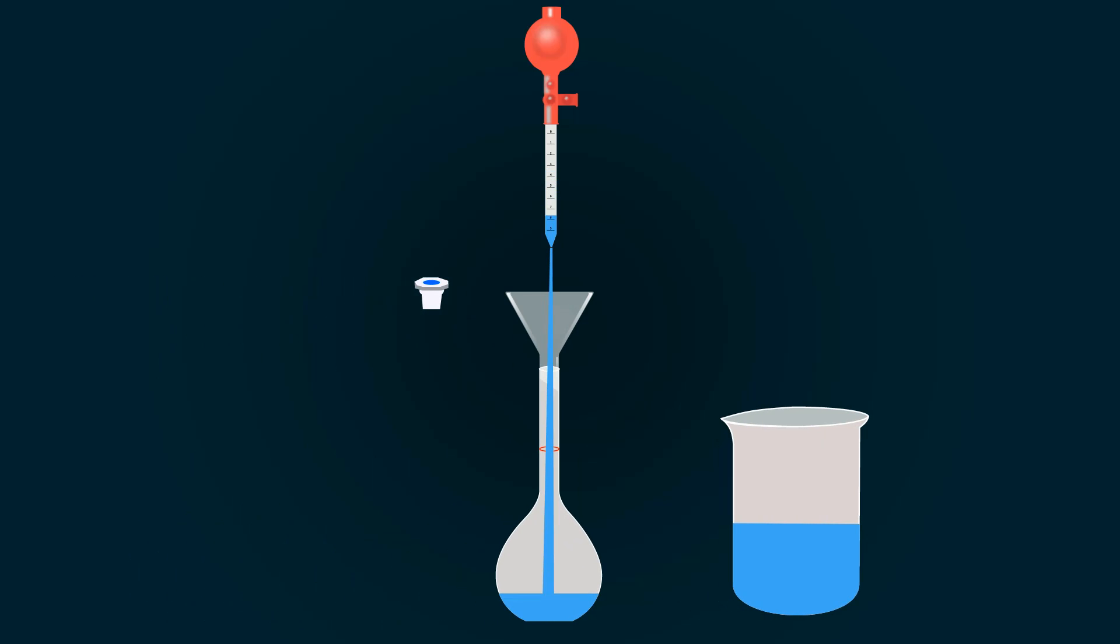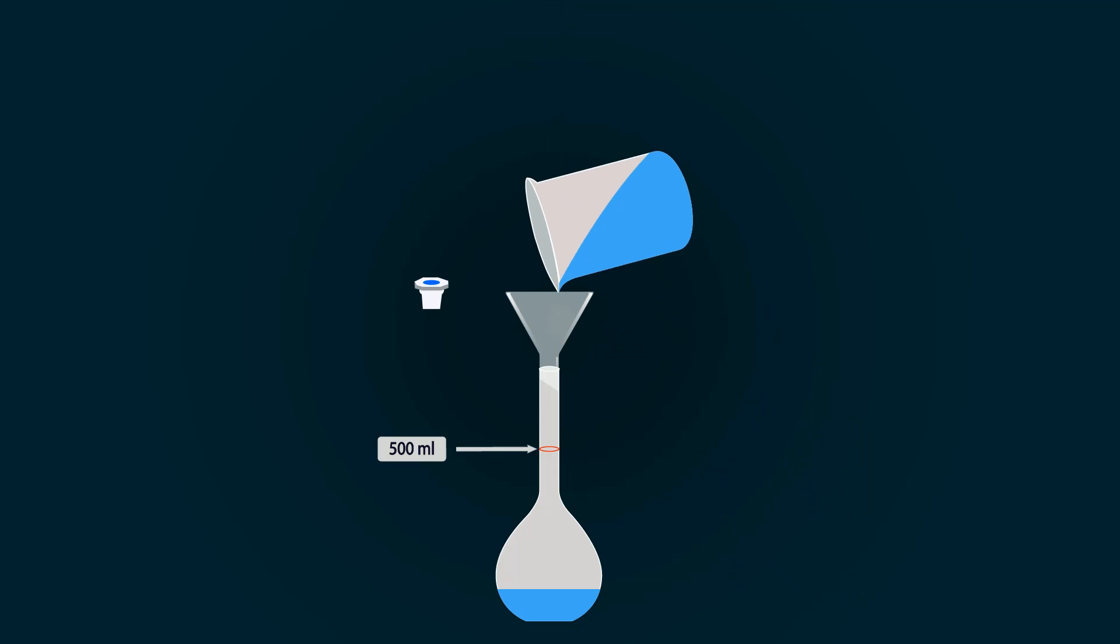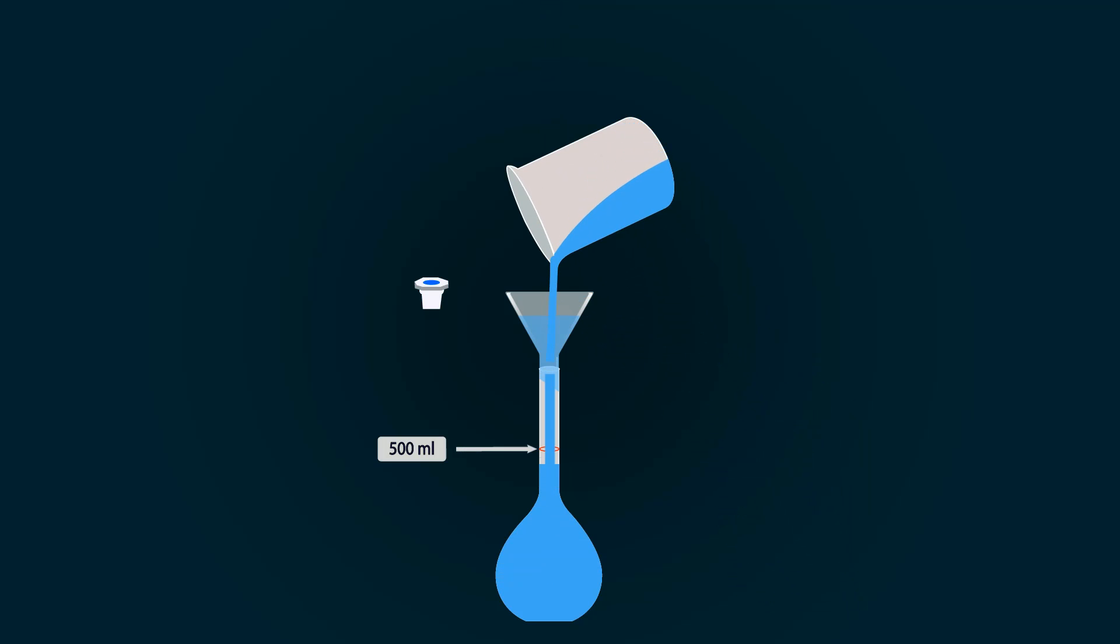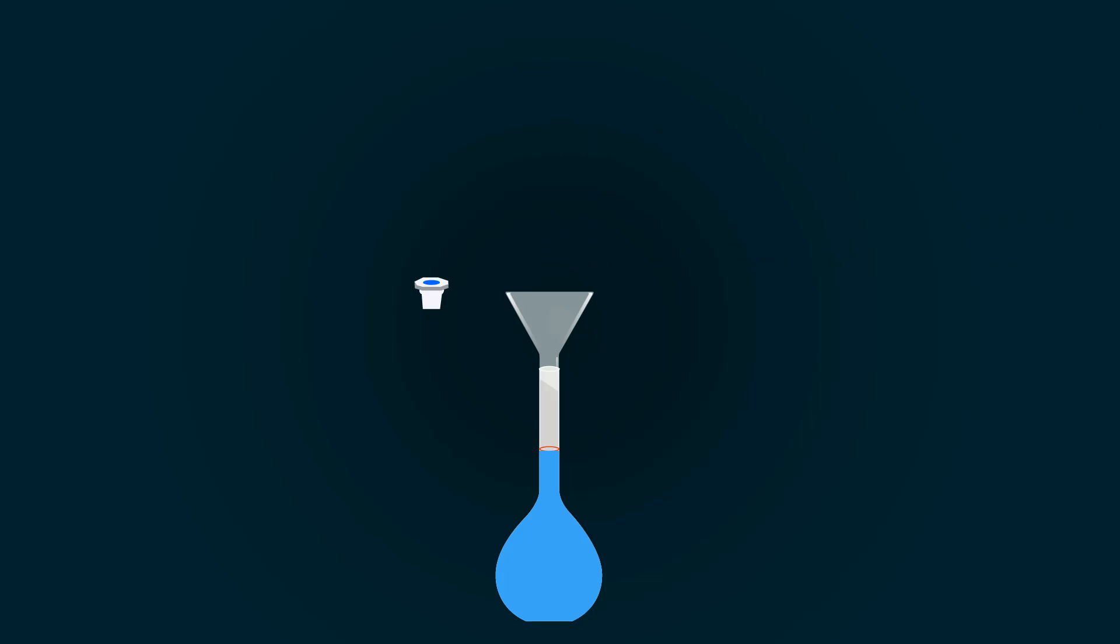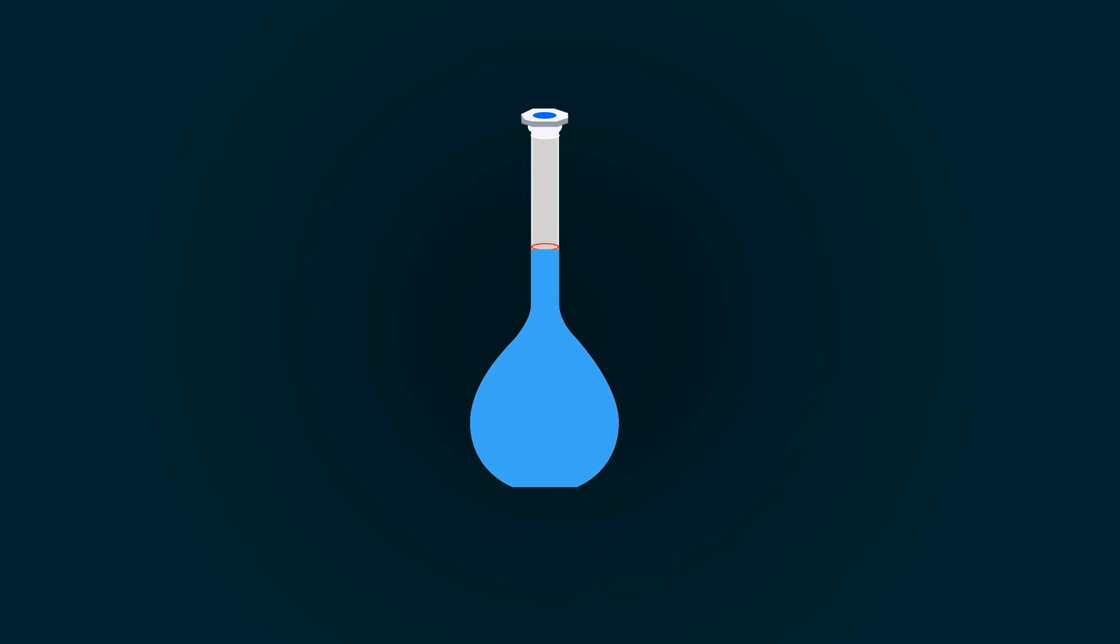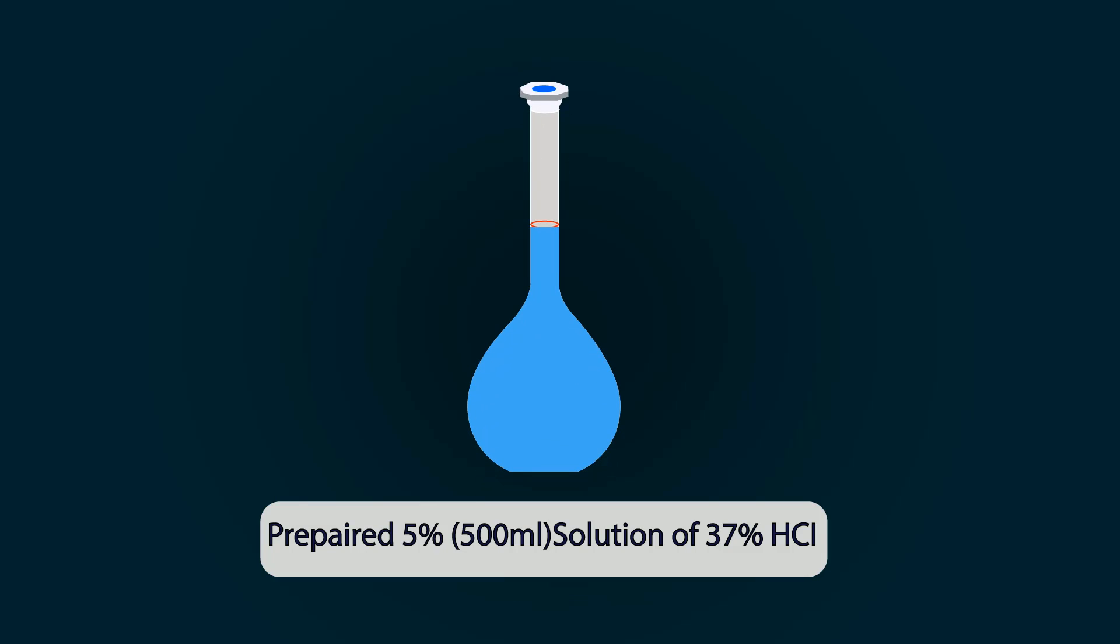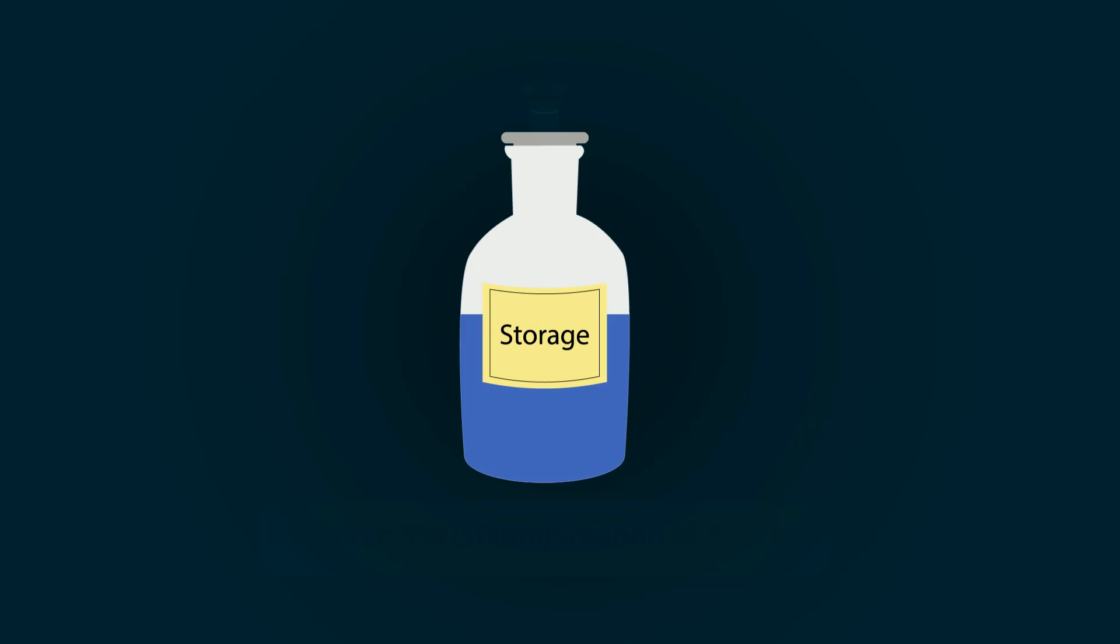Now add distilled water up to the 500ml point. Close the measuring flask with the cap and you will get 5% solution of 37% HCl. Now you can store it in any bottle you want. Thank you.